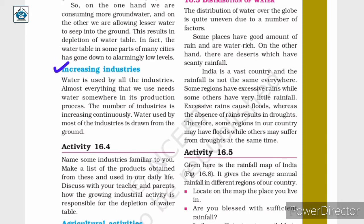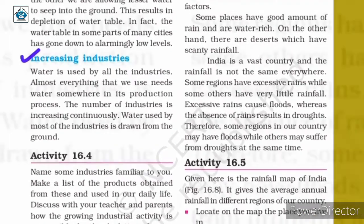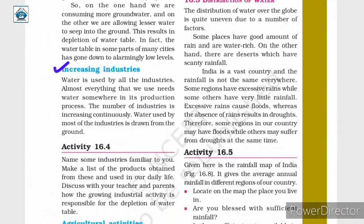Water is used by all industries — almost everything we use needs water somewhere in its production process. The number of industries is increasing continuously, and water used by most industries is drawn from the ground. As the number of industries increases, more water is drawn from the ground, resulting in depletion of the water table.